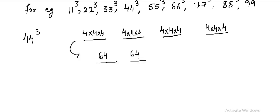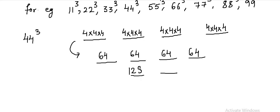So what we get is 64 in the first box, 64 in the second box, 64 in the third box, and 64 in the fourth box. Now, in the four-box method, we multiply the middle two numbers by 2, so we have 128 here and 128 here.